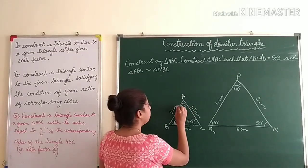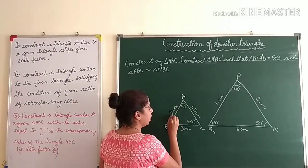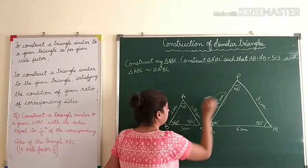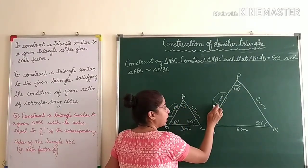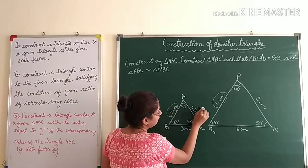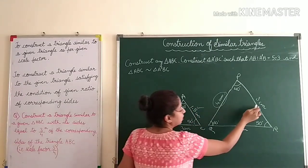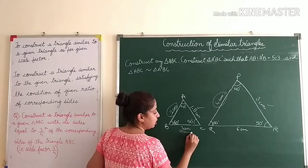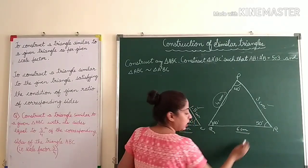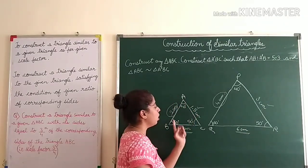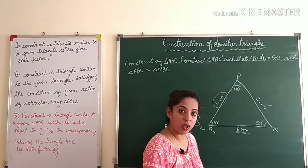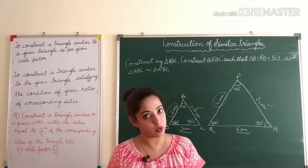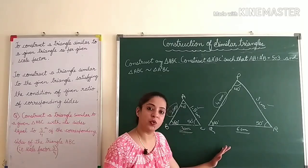For example, if side AB is 2 cm then side PQ is 4 cm — twice as long. If one side is 1.5 cm the corresponding side is 3 cm, and if another side is 3 cm the corresponding side is 6 cm. So all corresponding angles are equal and the corresponding sides are in the same ratio — these are similar triangles.